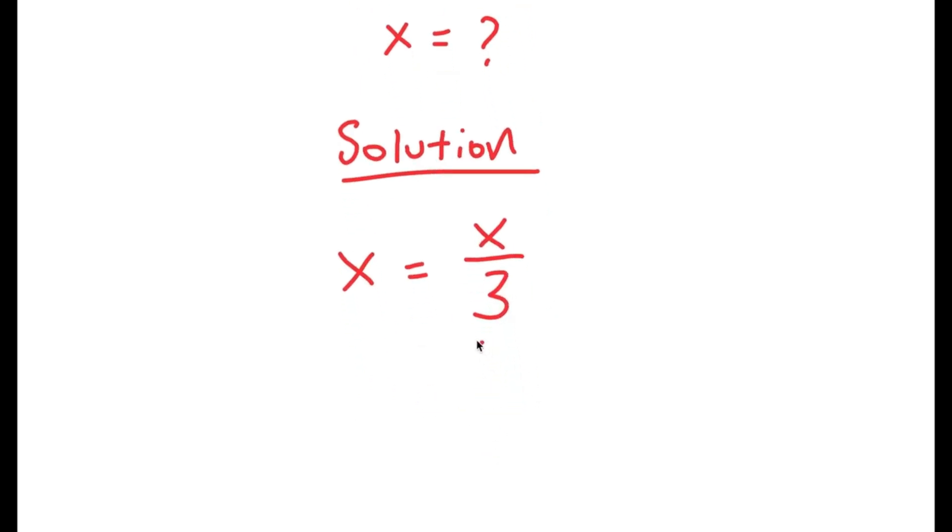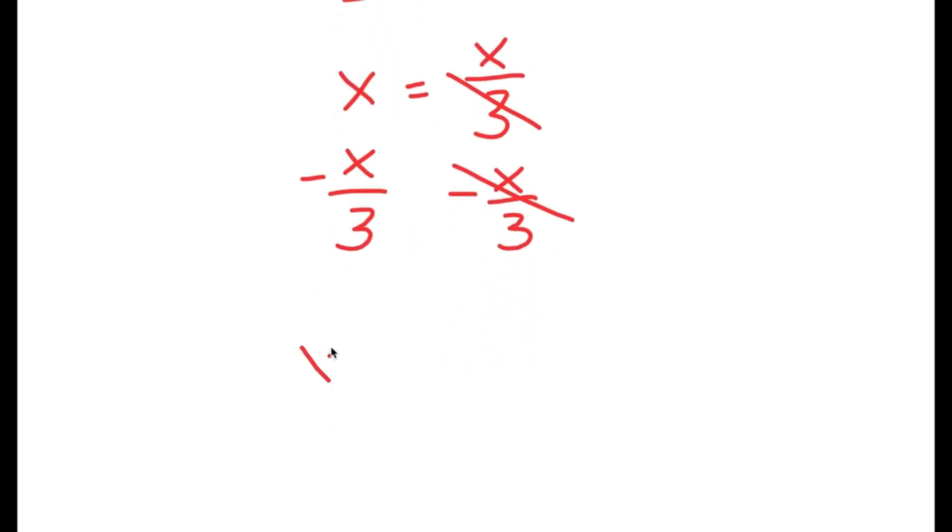again, my equation is x equals x over 3. And what I'm first going to do is subtract x over 3 on both sides. So then these two cancel out, and I get x minus x over 3 is equal to 0.